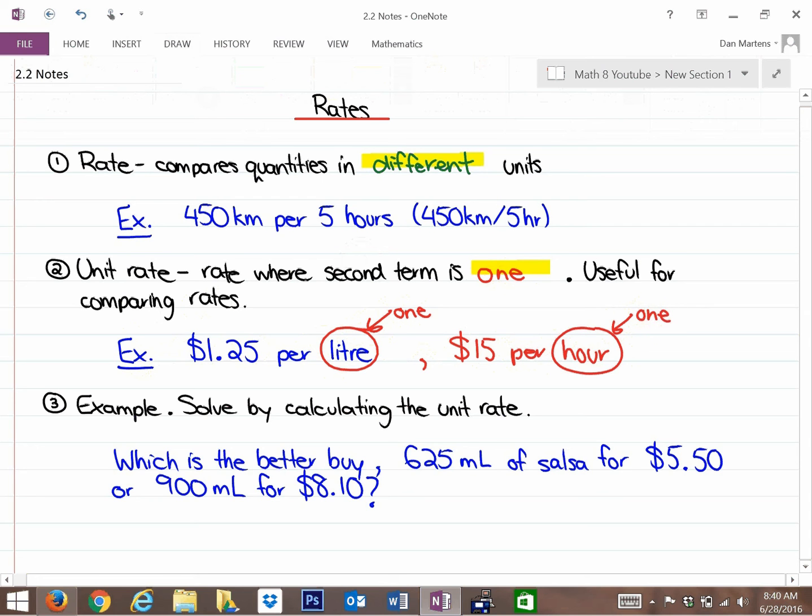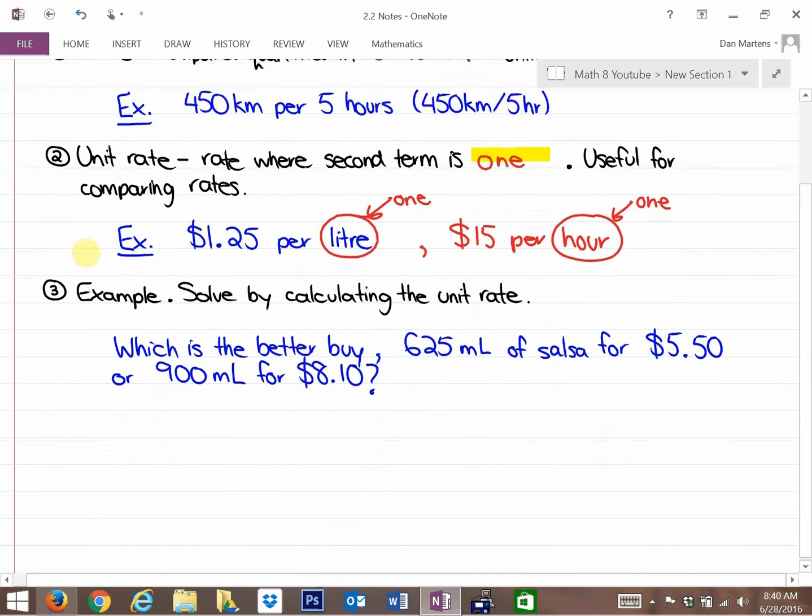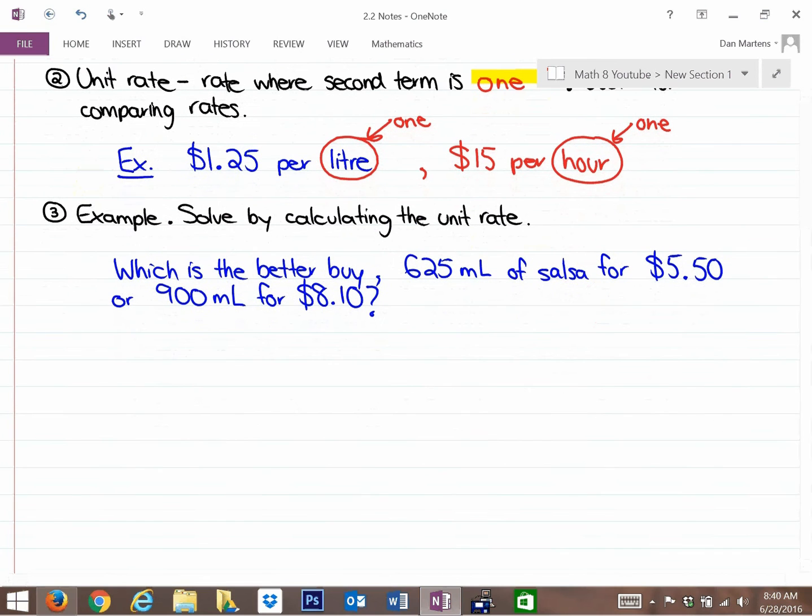We're going to do one example here. Again, you might want to pause this video to copy it down before we do it, and you may want to do some of these calculations on your own as you're going over this problem. We have an example here and we're going to solve by calculating the unit rate. The question is, which is the better buy? 625 milliliters of salsa for $5.50 or 900 milliliters for $8.10?